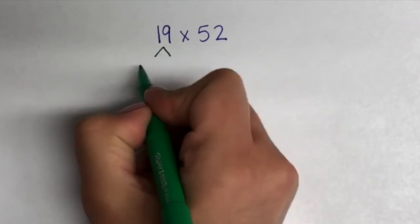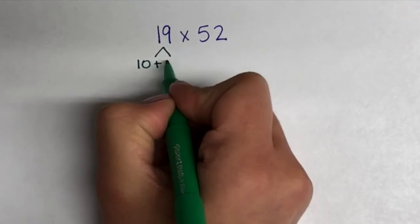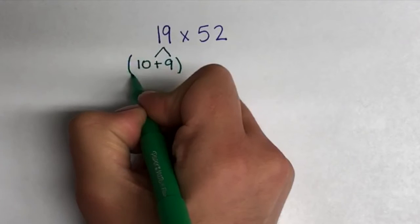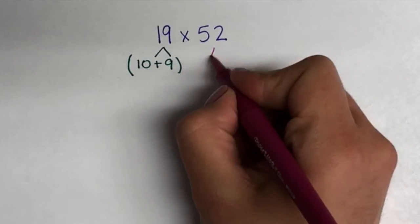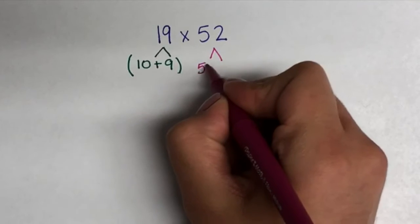First step, we are going to break apart our two factors. 19 can be broken apart into 10 plus 9, and 52 can be broken apart into 50 plus 2.